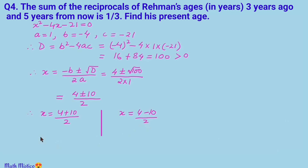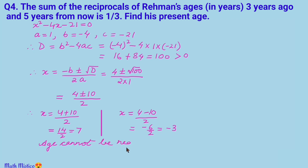The two values of x are 7 or −3. Since age can never be negative, we reject x = −3. Therefore x = 7, and Rahman's present age is 7 years.